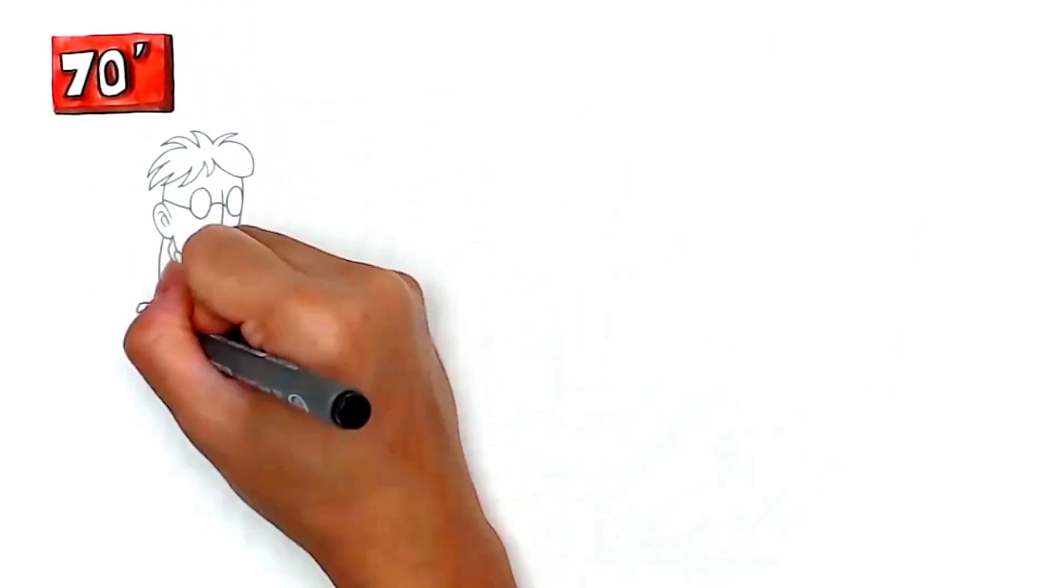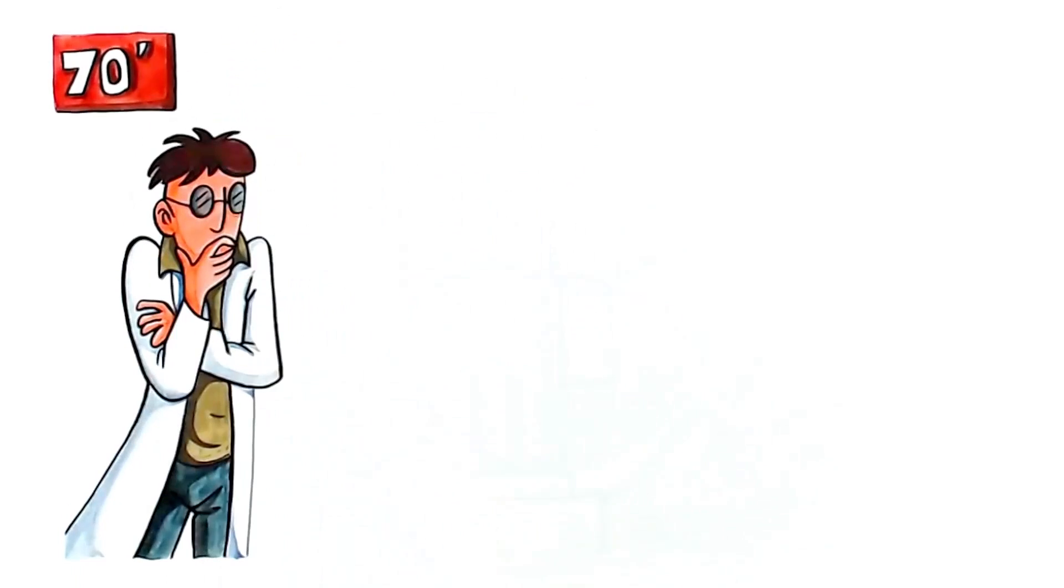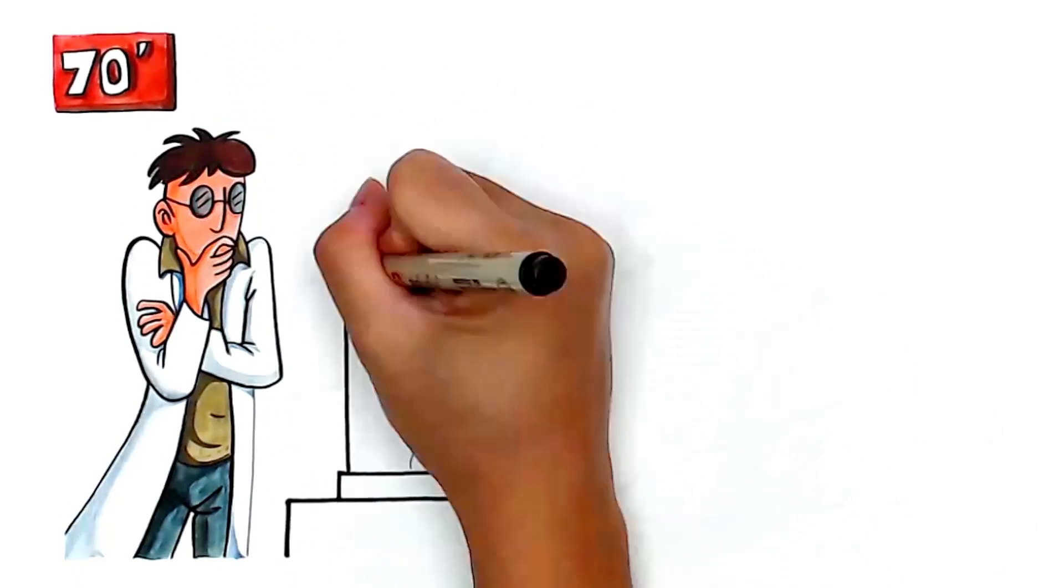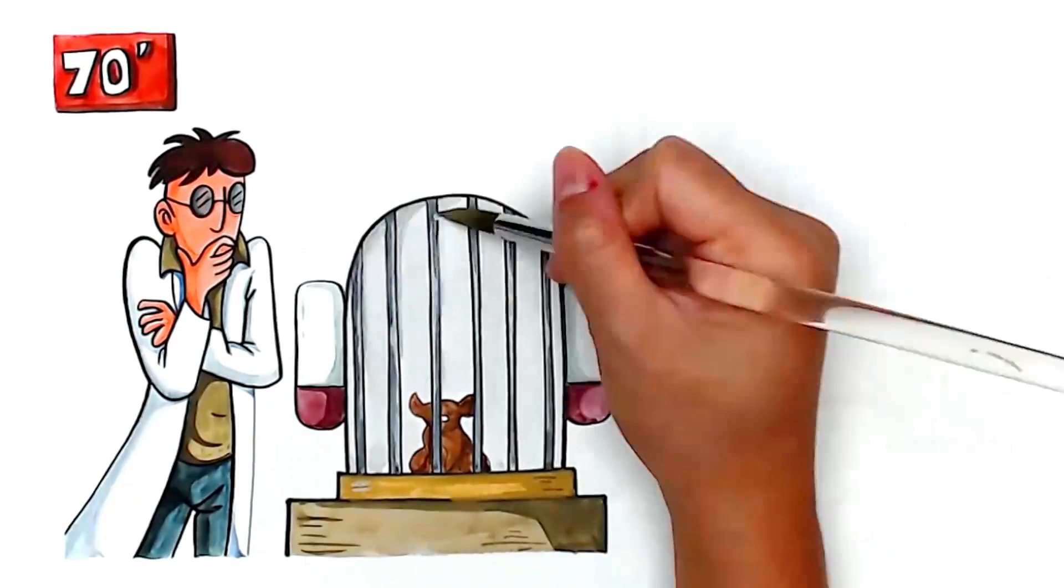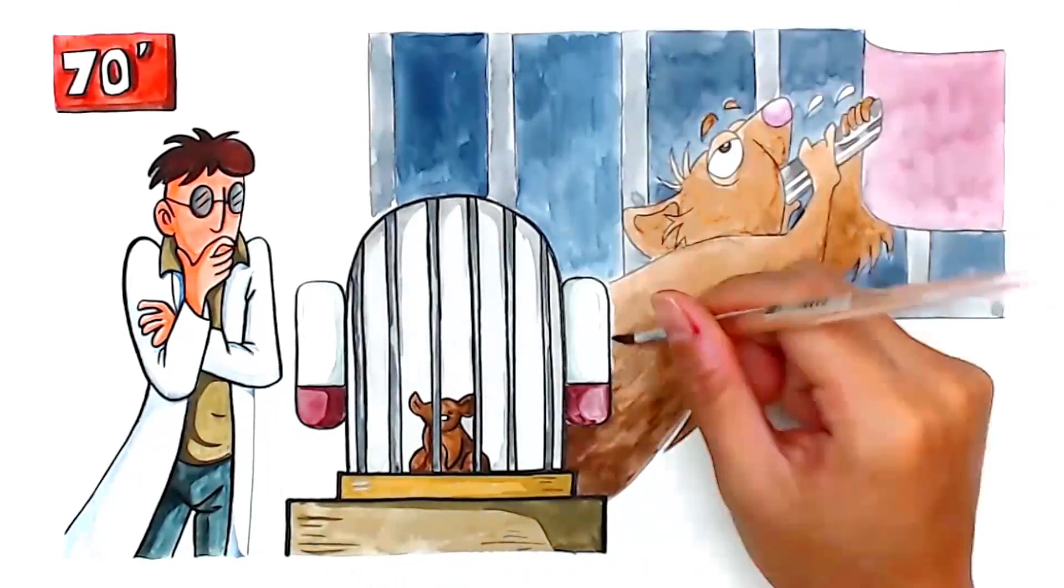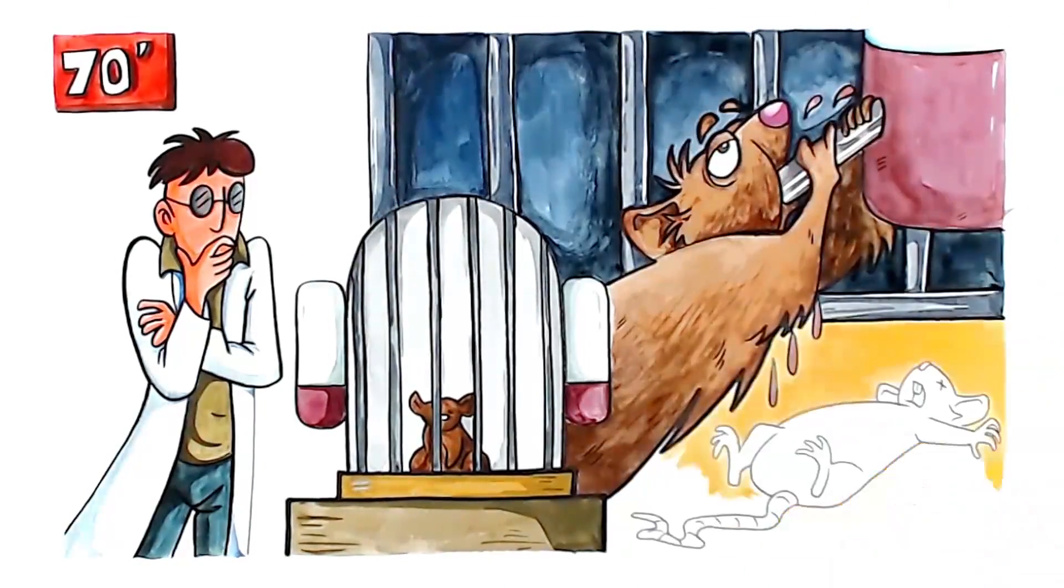In the 70s, a research experiment found that when a rat is put in an empty cage, all alone with two water bottles, one normal and one drugged, it gets addicted to the drugged water and eventually dies of malnutrition.